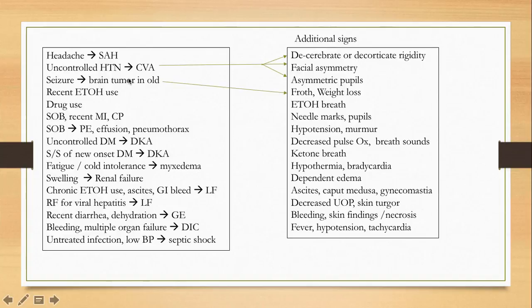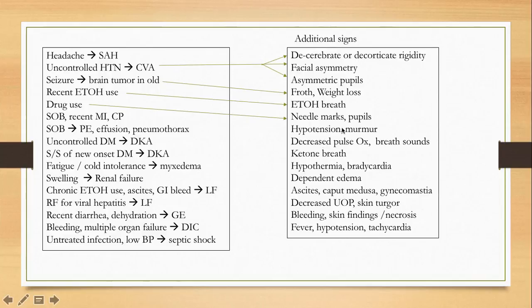In a patient with a brain tumor who lost consciousness via seizure, you may notice froth on exam and possibly a history of weight loss. In case of drug use, you may notice needle marks on the hands, and pupil size may be constricted or dilated depending on the substance.